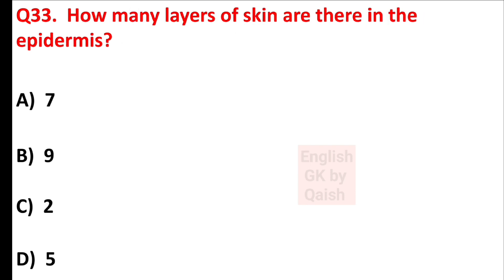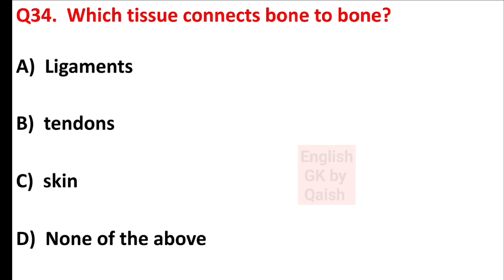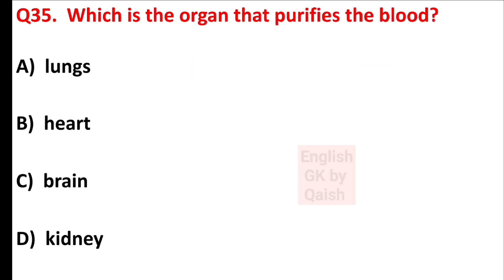How many layers of skin are there in the epidermis? Answer is option D — 5. Which tissue connects bone to bone? Answer is option A — ligaments. Which is the organ that purifies the blood? Answer is option D — kidney.